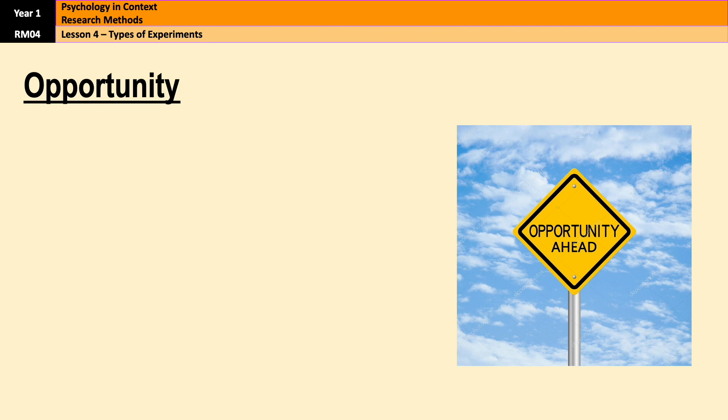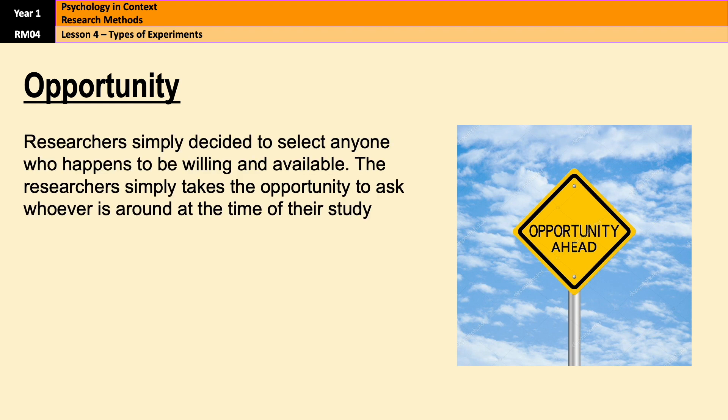Our first sampling method is called opportunity sampling. This technique involves selecting participants who are available at the time and are willing to take part in the study — basically, your participants are the first people that you come across who are available to take part. An example would be a researcher standing outside a shopping centre and asking passers-by to participate in a survey about consumer behaviour.